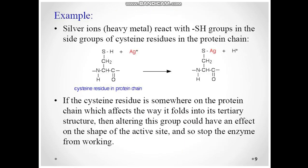For example, silver ions, which are heavy metals, affect the acid groups of cysteine residues in the protein chain. If the cysteine residue is somewhere on the protein chain, it affects how the protein folds into its tertiary structure. Altering this group can have an effect on the shape of the active site and stop the enzyme from working.